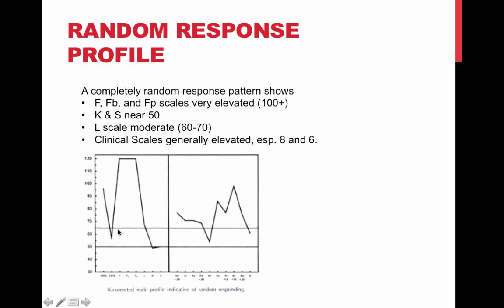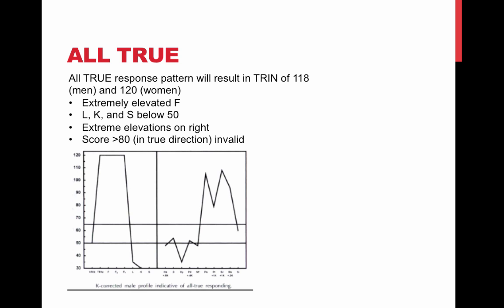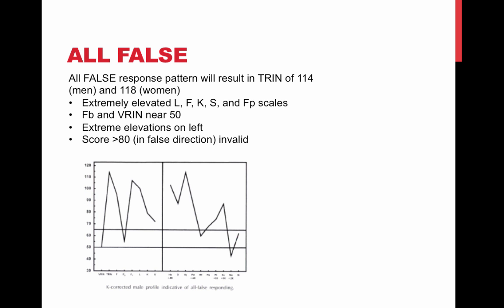This one has an F score way over 100, and 100 is invalid. The FP, FB — all of these are fake bad kinds of profiles. But also the fact that the K is near 50 indicates this was a completely random response. Here's an all-true response — you see a similar block up at the top, where this person just responded everything in a true pattern. Here's an all-false profile, which looks different, but it's also an invalid profile. When you've got these things up over 100, that's when we start looking and saying there's something wrong with this.